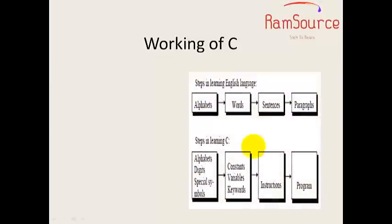Working of C: Just like in English language we use alphabets, words, and sentences, when you write a program you need alphabets, digits, special symbols, constants, variables, keywords, and instructions. This is how you can use all the help of C program.